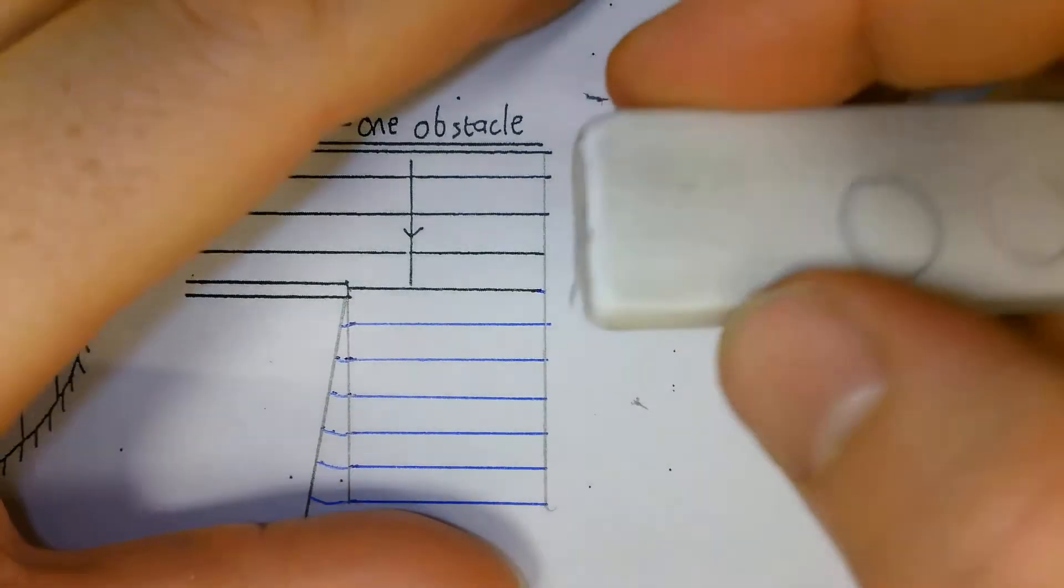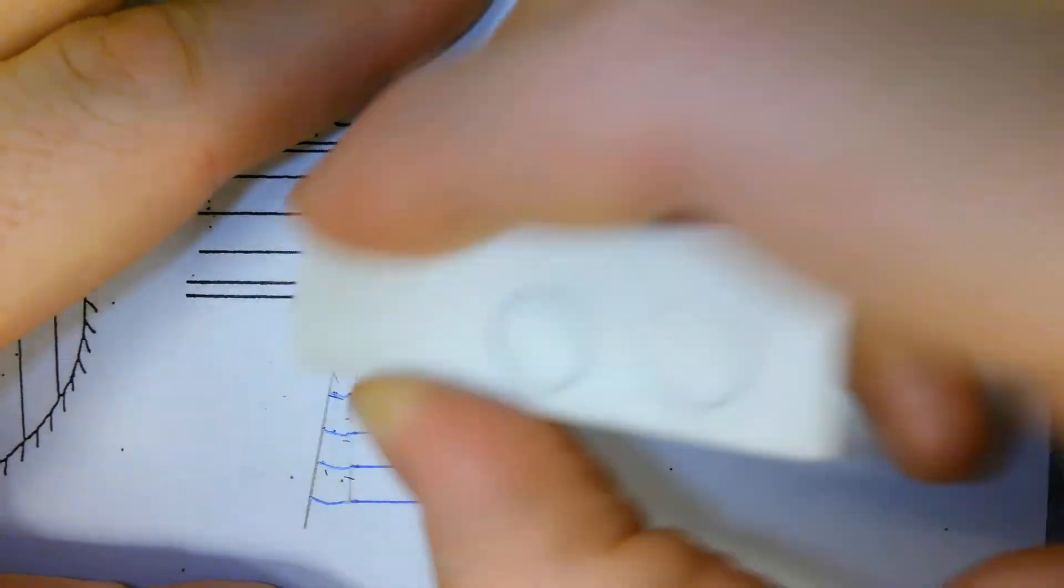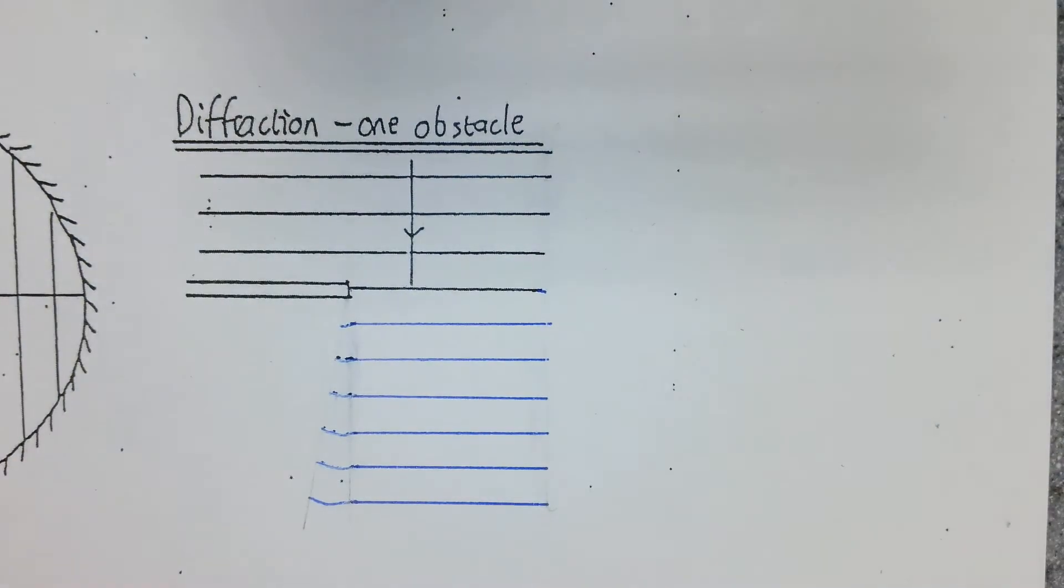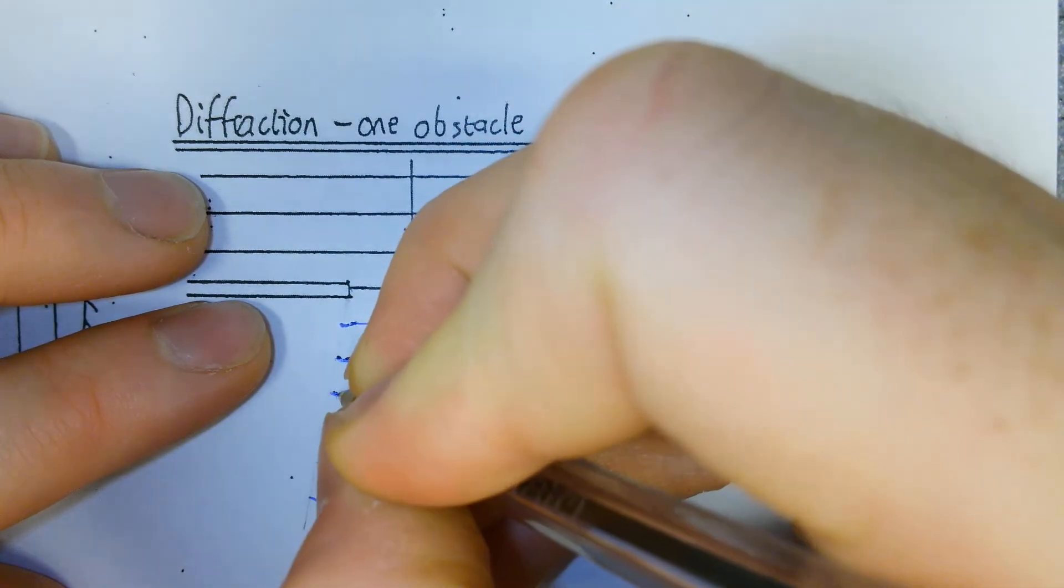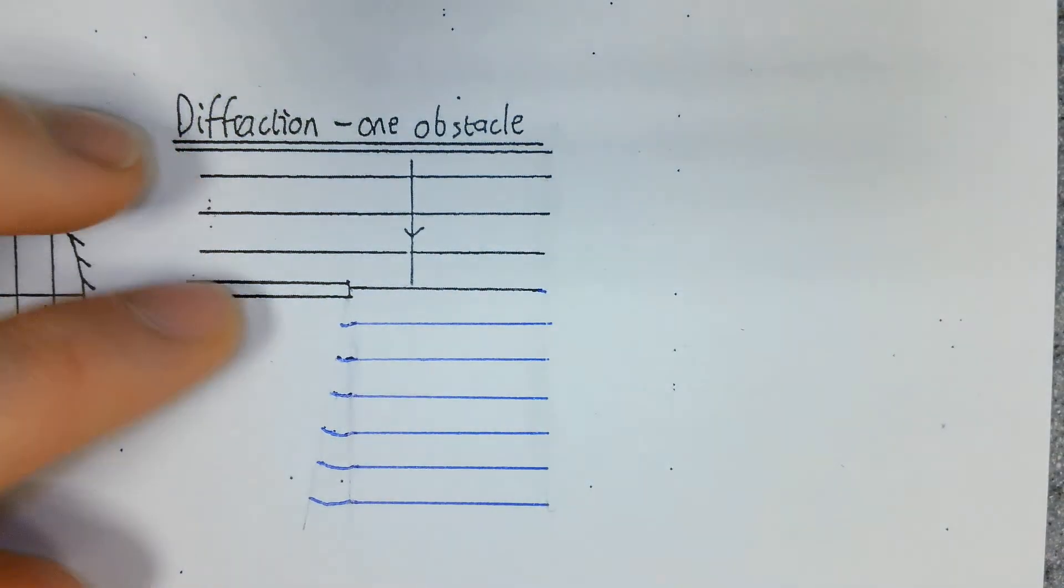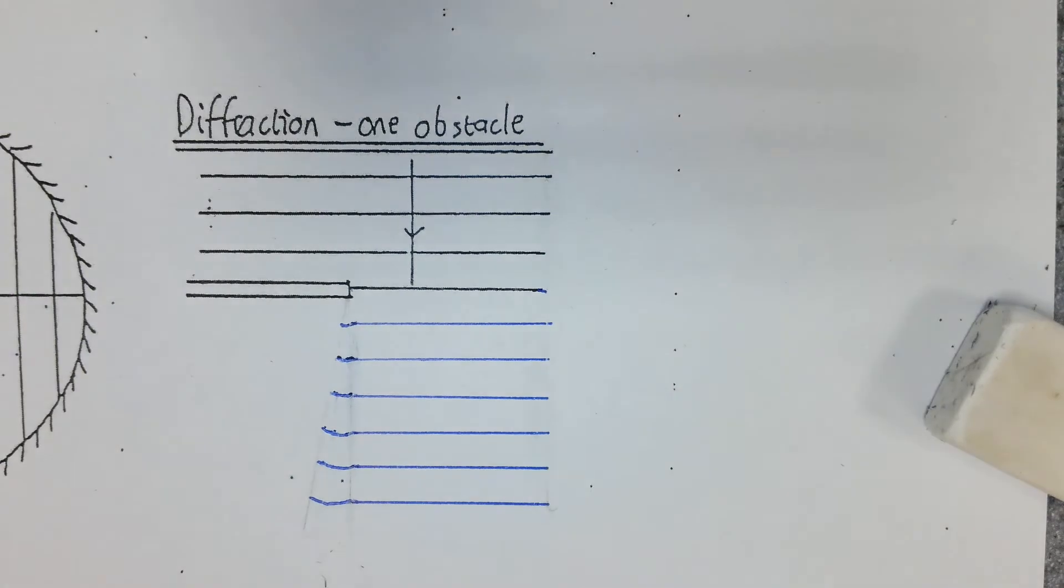I'm just going to rub out the construction lines. Wait a little bit longer on the part that's still smudging, just wait a little bit longer with your ink. There we go, that is your diagram for diffraction past one obstacle.